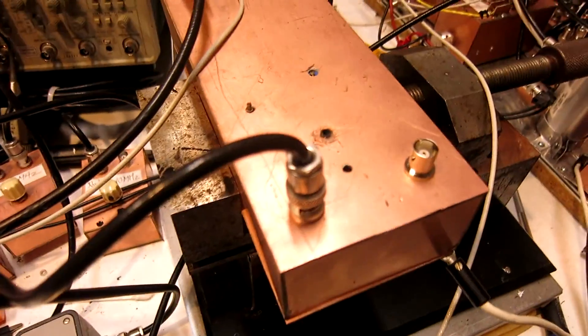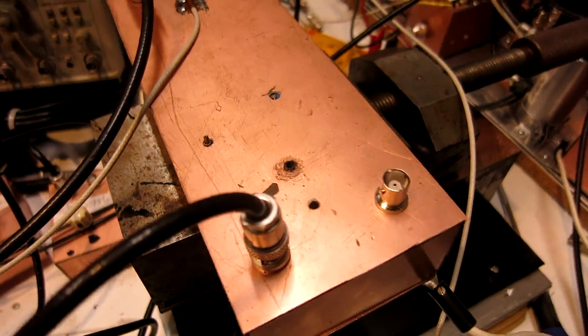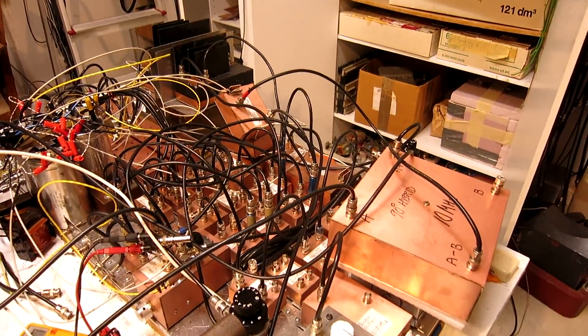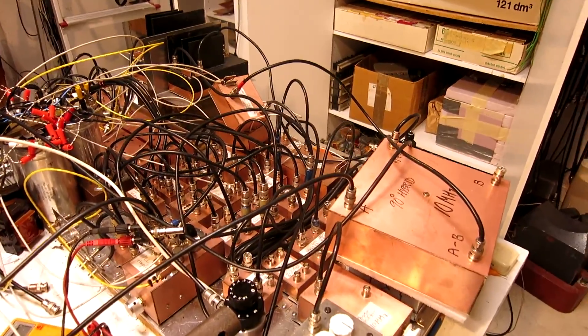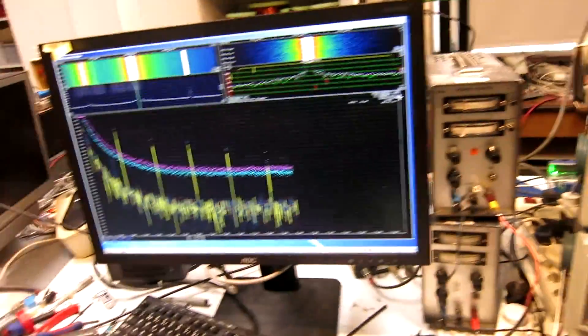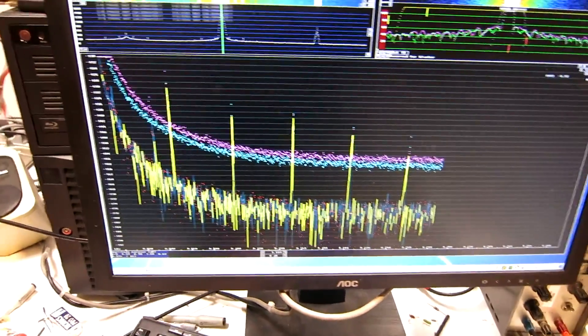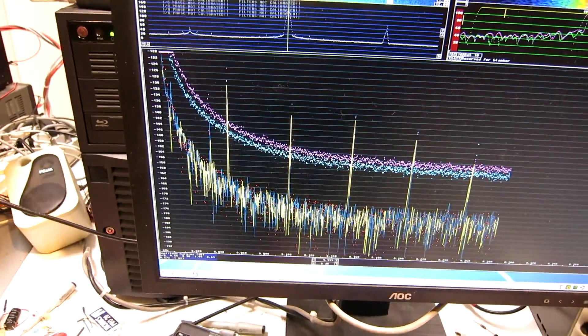I'm feeding 0 dBm into this box and then the output goes to this system I have here which is two direct conversion receivers. Then I'm analyzing the result in Linrad with the signal analyzer mode and this is what I see on the screen.